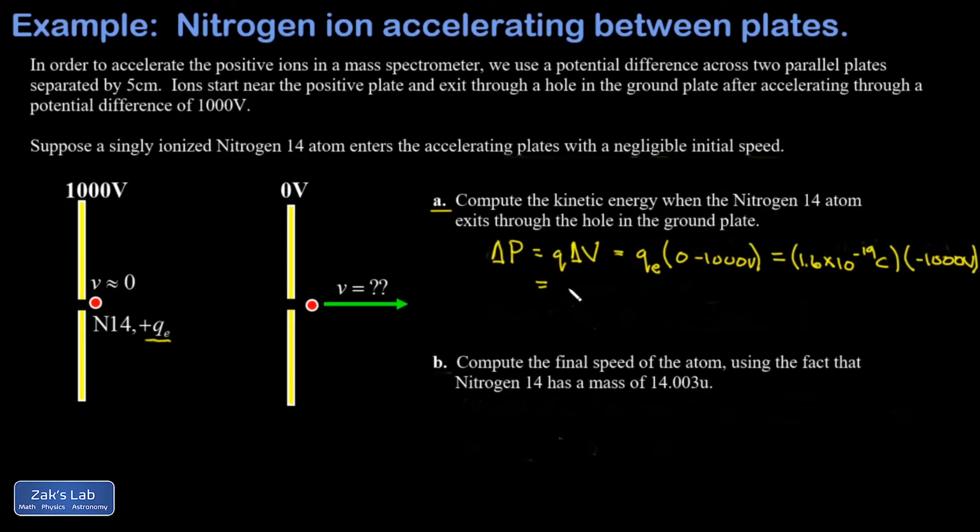We get a potential energy change of negative 1.6 times 10 to the negative 16 joules. Well, if the potential energy is going down by that much, the kinetic energy is going up by that much. Our initial kinetic energy is zero because we're told this atom enters the accelerating plates with negligible speed. That means my final kinetic energy is positive 1.6 times 10 to the negative 16 joules.